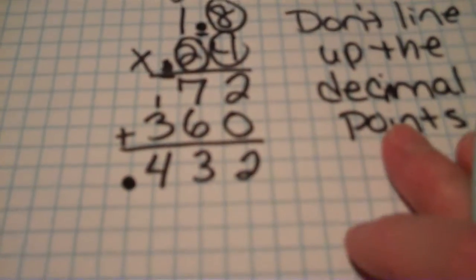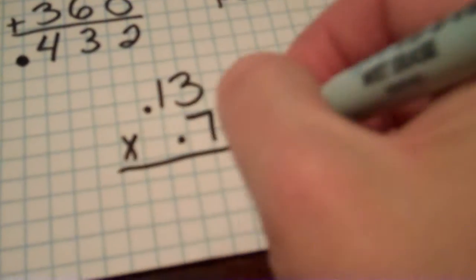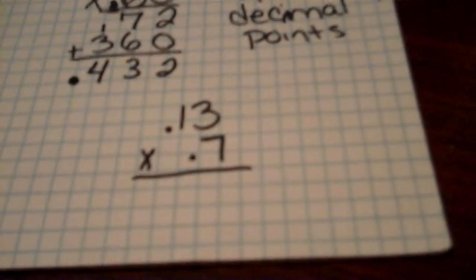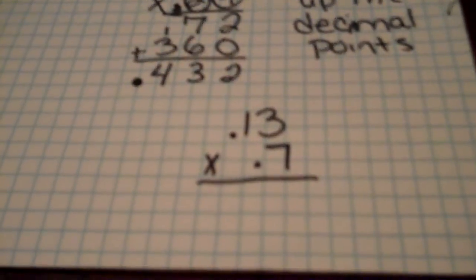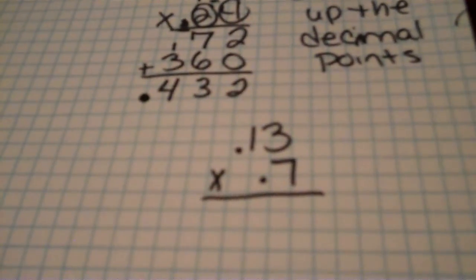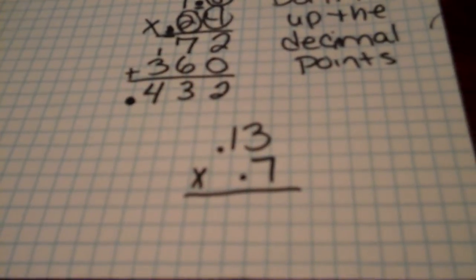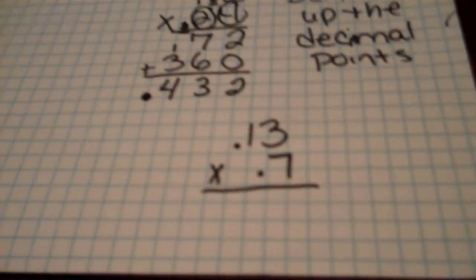I want you to try one. I'll give you an easy one. 0.13 times 0.7. I'm going to give you a few minutes to answer this problem. So pause me and try this problem. This should be on your paper when you come to class.